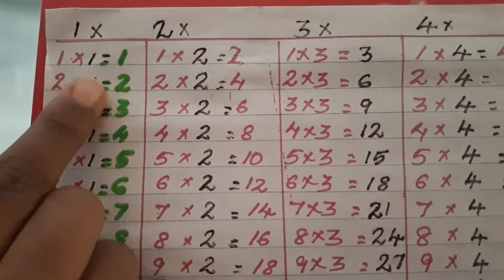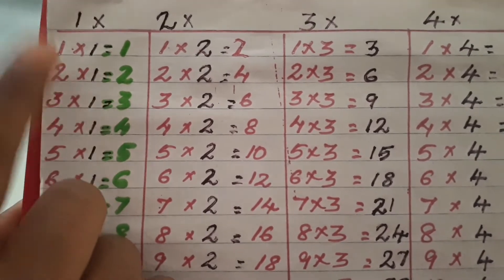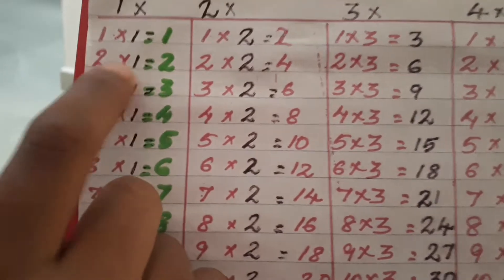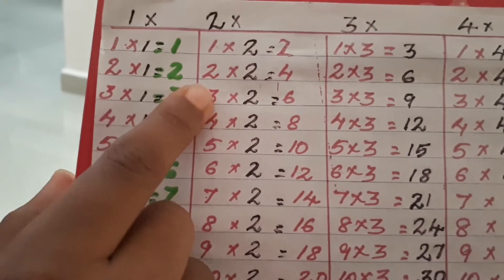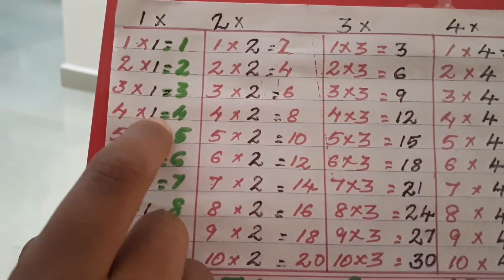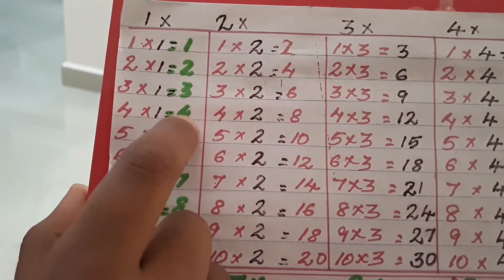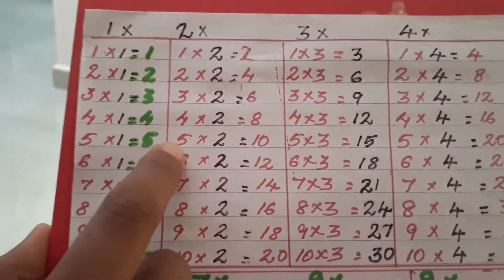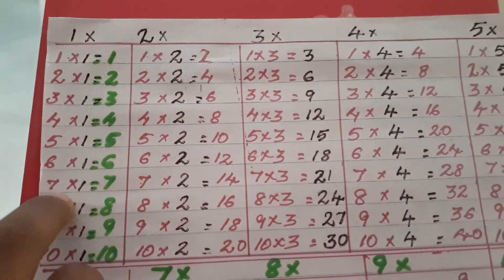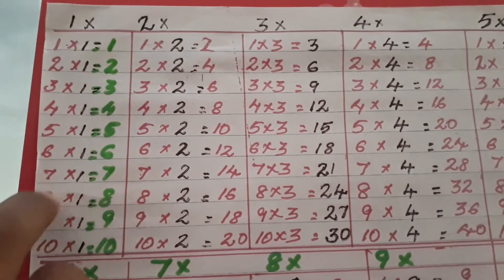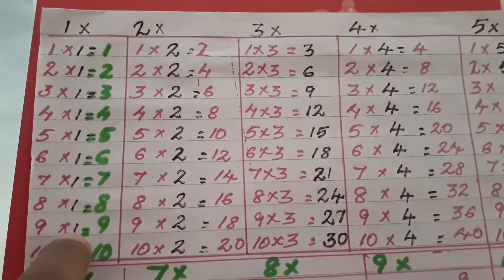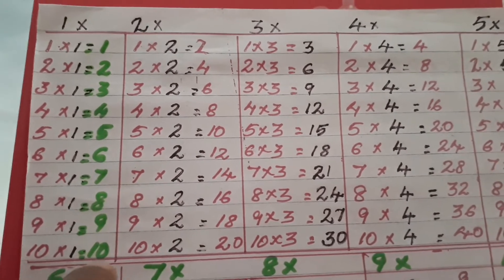Now, let's see table of 1. 1 one is 1. 2 ones are 2. 3 ones are 3. 4 ones are 4. 5 ones are 5. 6 ones are 6. 7 ones are 7. 8 ones are 8. 9 ones are 9. 10 ones are 10.